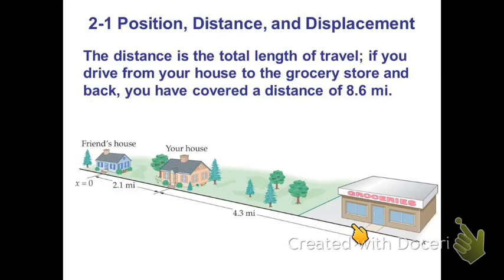For example, if you drive from your house to the grocery store and you go back to your house again, you have covered a distance of 8.6 miles — just twice the distance between your house and grocery store, because you cover this part of the line twice: when you go from your house to the grocery store, and go back again to your house.